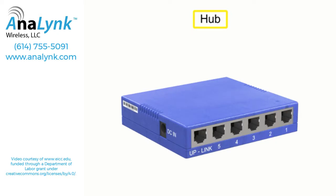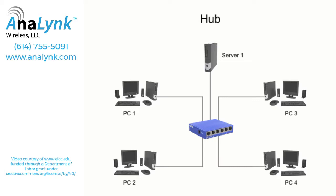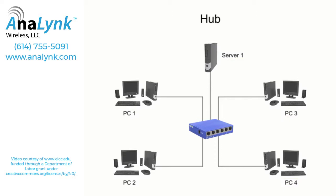A hub is a centralized connecting device, often located at the center of a star network, that automatically rebroadcasts any signal or data that it receives from one device to all other devices on the network. Because all the devices connected to a hub are competing for media usage, it's possible for collisions to occur when two devices send transmissions simultaneously. For this reason, it's important to avoid using a hub for messaging that requires immediate response.